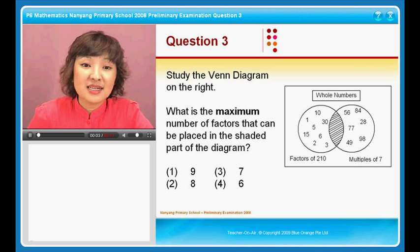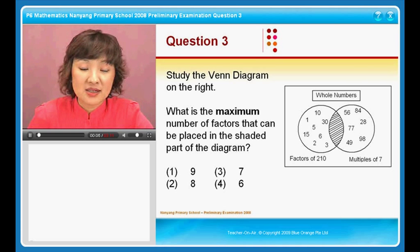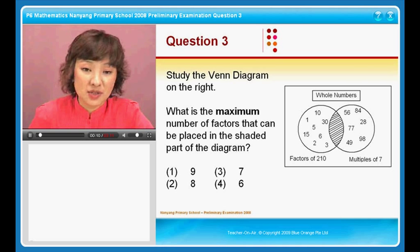Let's now move on to question 3. Study the Venn diagram on the right. What is the maximum number of factors that can be placed in the shaded part of the diagram?